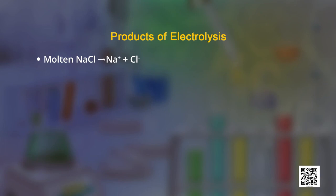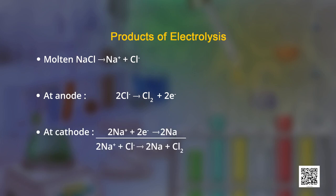Let us now understand what would be the products of electrolysis of sodium chloride. We will take molten sodium chloride with an inert electrode of platinum. Molten sodium chloride is an ionic electrolyte which gives the reaction: molten NaCl breaks into sodium ions and chloride ions. At the anode, chloride ions undergo oxidation by losing two electrons. At the cathode, sodium gains two electrons and undergoes reduction. Hence, sodium metal deposits at the cathode and chlorine gas evolves at the anode.